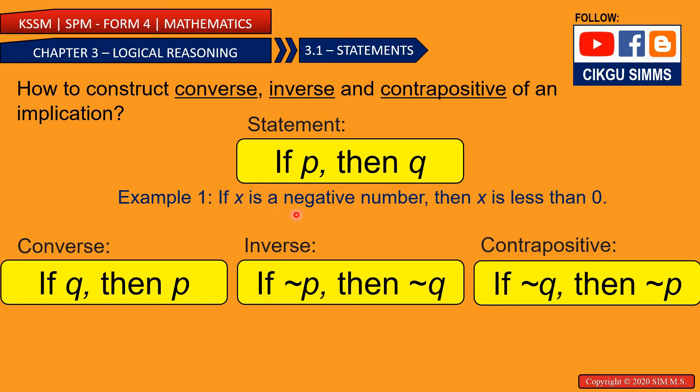Let's see the example. P statement is x is a negative number and Q statement is x is less than 0. So this implication says that if x is a negative number, if x is negative then x is less than 0. That means for example negative 1, negative 2, negative 3, so x is less than 0 if x is negative.